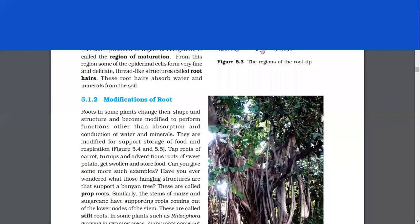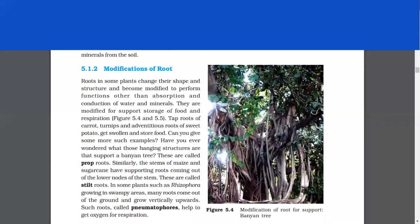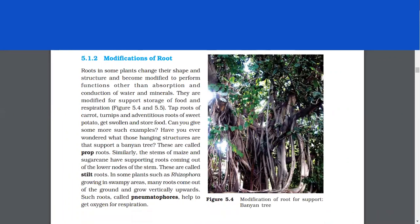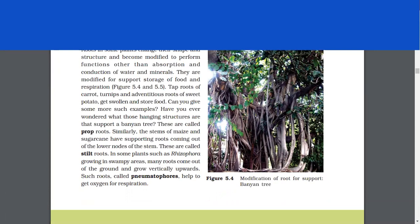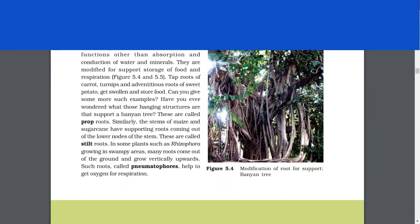Modifications of root. Roots in some plants change their shape and structure and become modified to perform functions other than absorption and conduction of water and minerals. They are modified for support, storage of food, and respiration. Tap roots of carrot, turnips and adventitious roots of sweet potato get swollen and store food. Can you give some more such examples? Have you ever wondered what those hanging structures are that support a banyan tree? These are called prop roots.